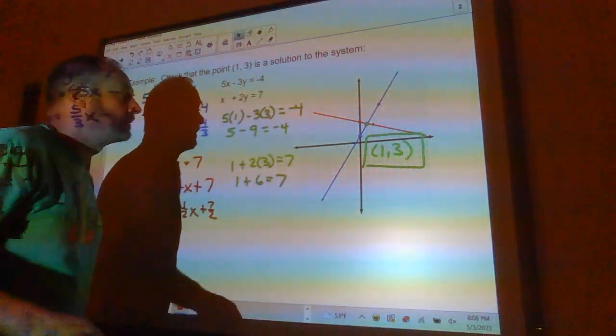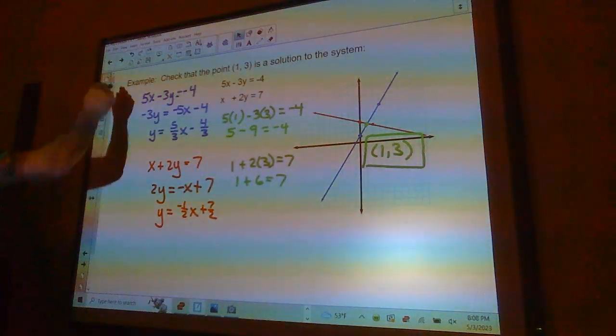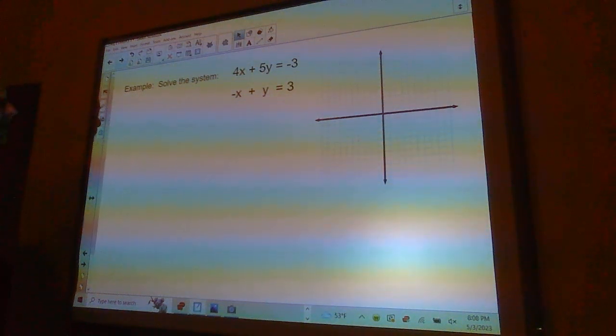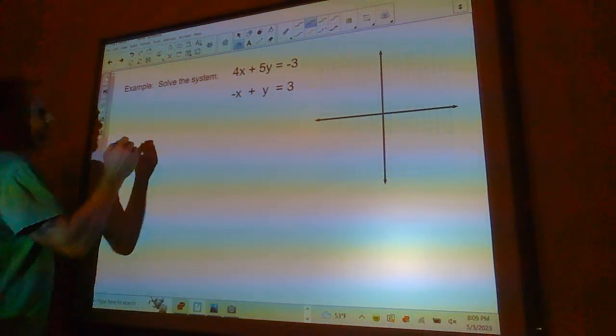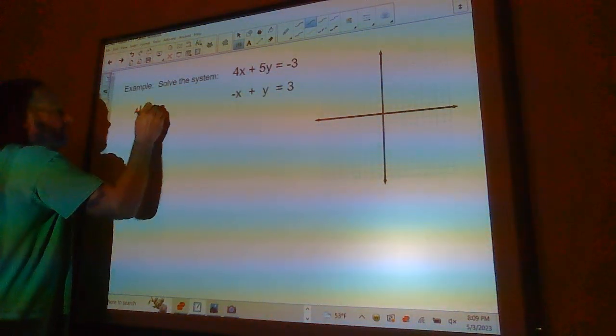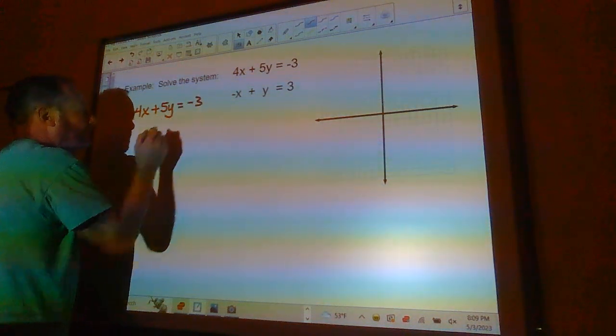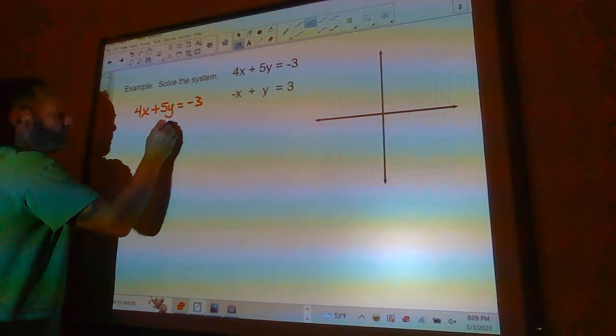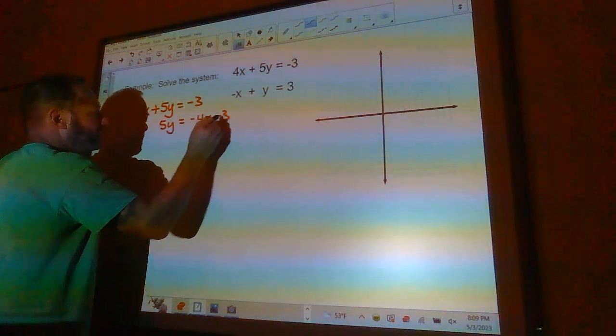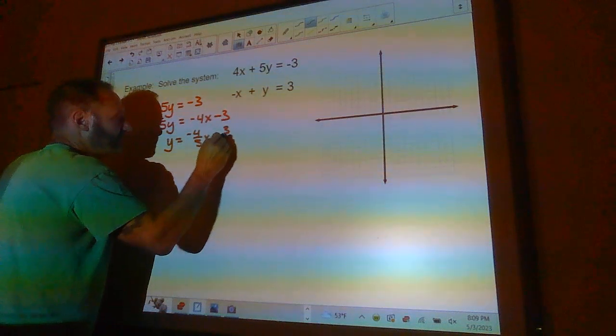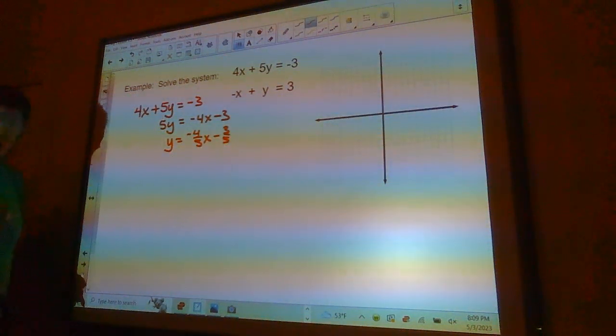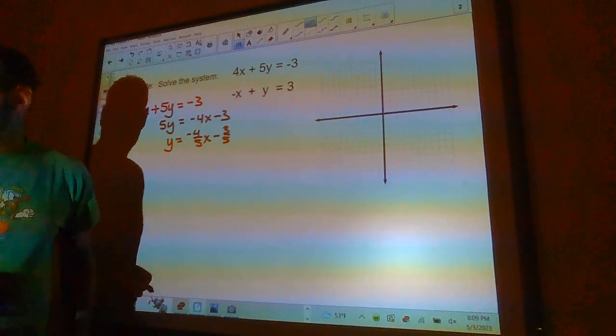Moving right along. Solve this system by graphing. So 4X plus 5Y is negative 3. Let's go ahead and we'll put that in slope-intercept form. 5Y is going to equal negative 4X minus 3. And Y is going to be negative 4 fifths X minus 3 fifths. We'll go ahead and graph that.